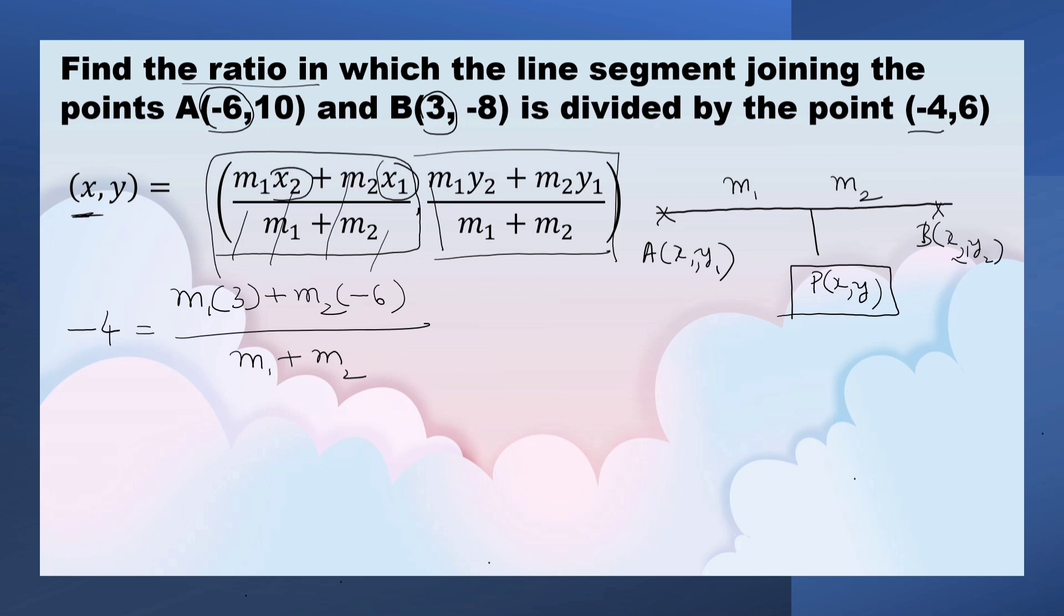Now, in order to find M1 is to M2, let us transpose M1 plus M2 to this side. Let us multiply it with minus 4. Minus 4M1 minus 4M2 is equal to 3 into M1, 3M1, minus 6 into M2, negative of 6M2.